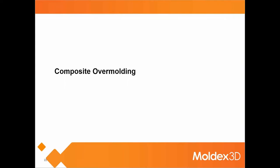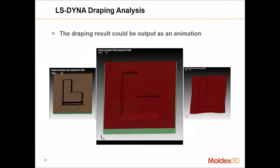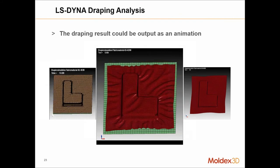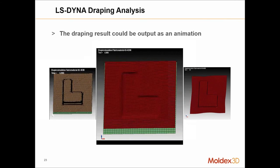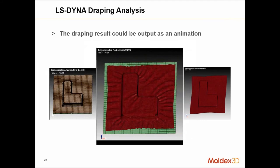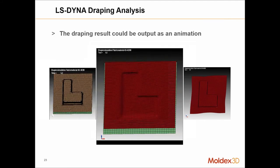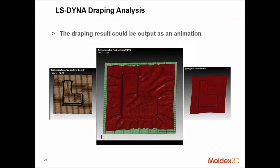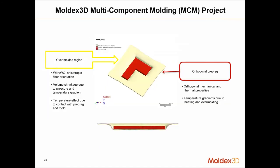Now let's go over composite overmolding. Basically, with LSDyna we create a preformed fabric and then overmold it with a thermoset or thermoplastic. Same as with compression molding, we perform a draping analysis of the fabric, then model the charge in MoldX3D and use that to finish the flow calculation to determine what's happening with the fabric — shear, fiber orientations, and such.